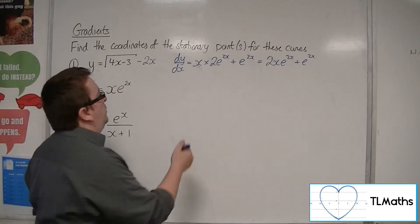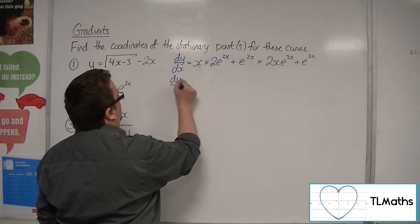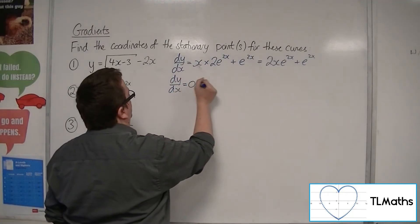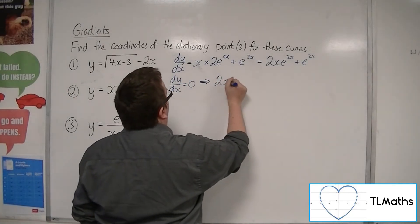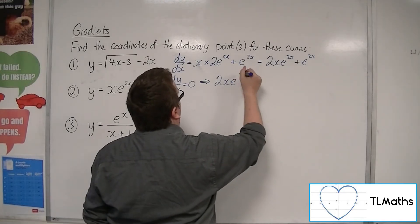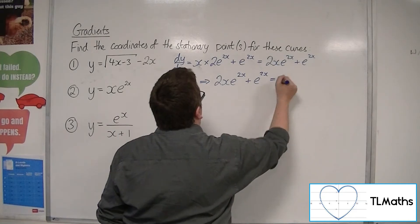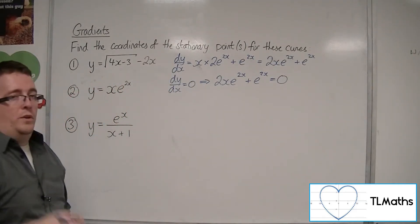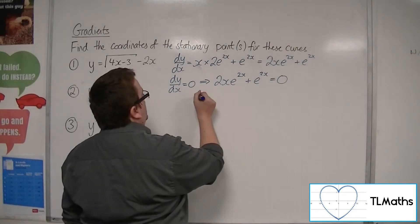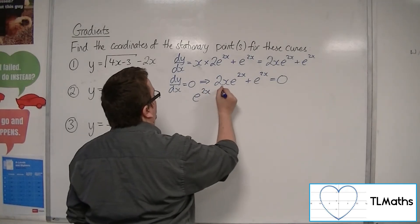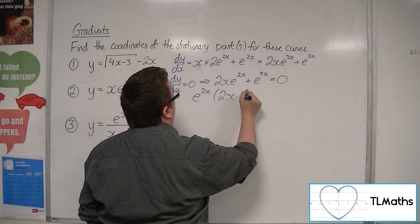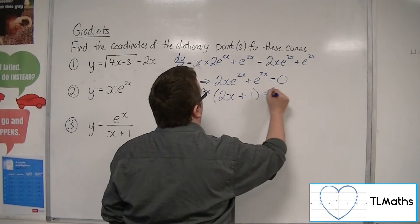So I want to put dy/dx = 0 to find the stationary points. So 2xe^(2x) + e^(2x) = 0. So you want to factorize that. Pull the e^(2x) outside of a single bracket and have 2x + 1 inside the bracket.